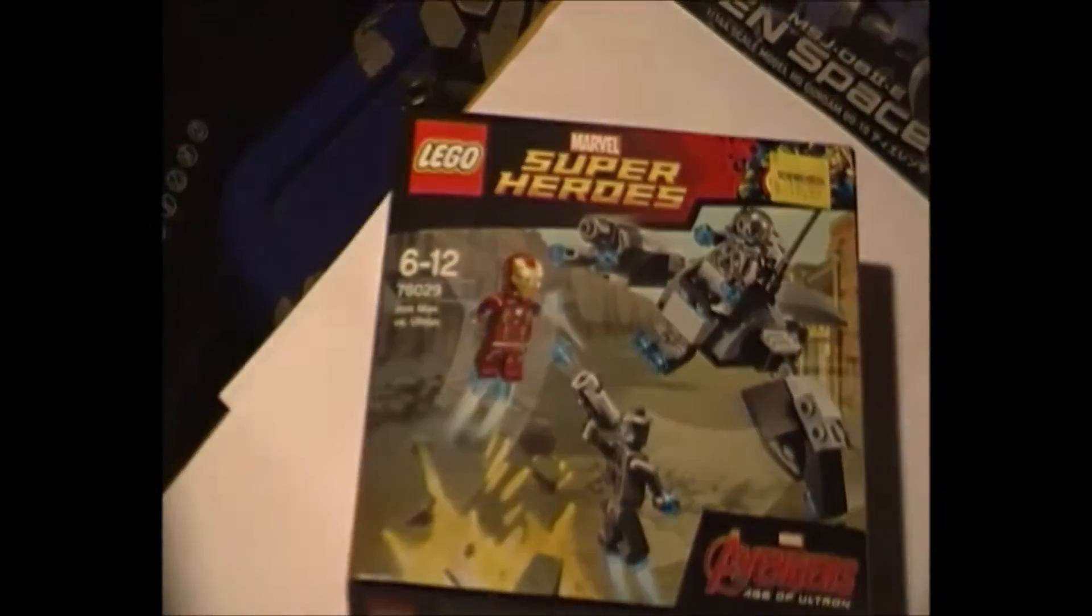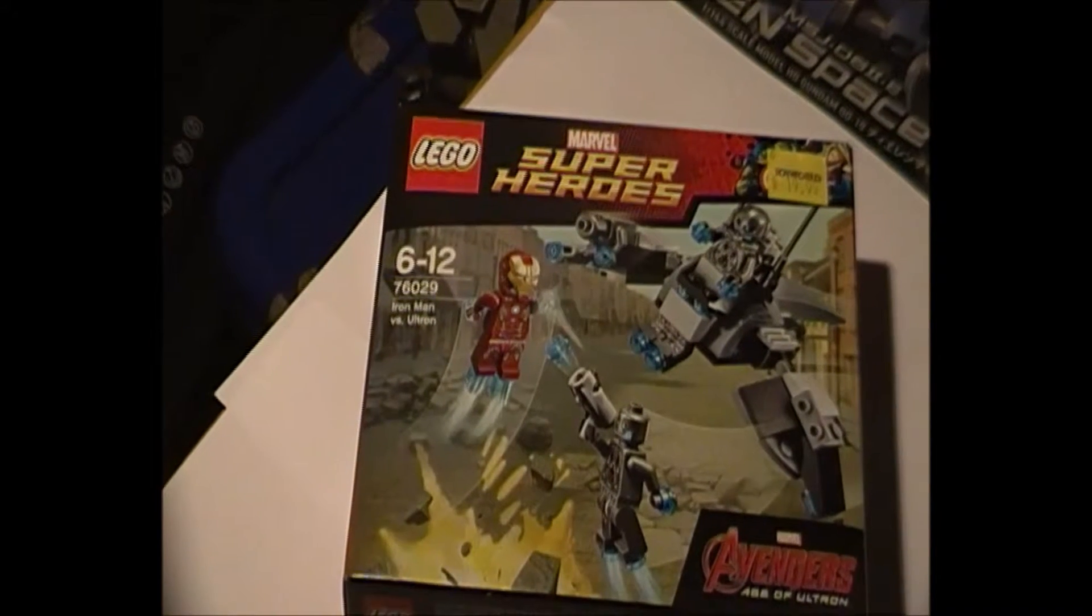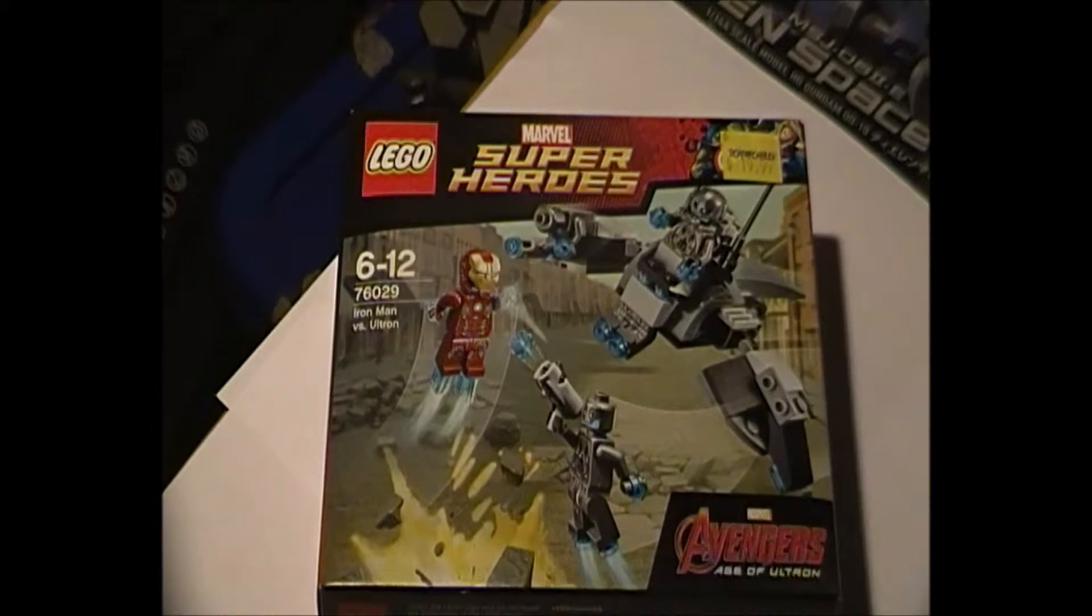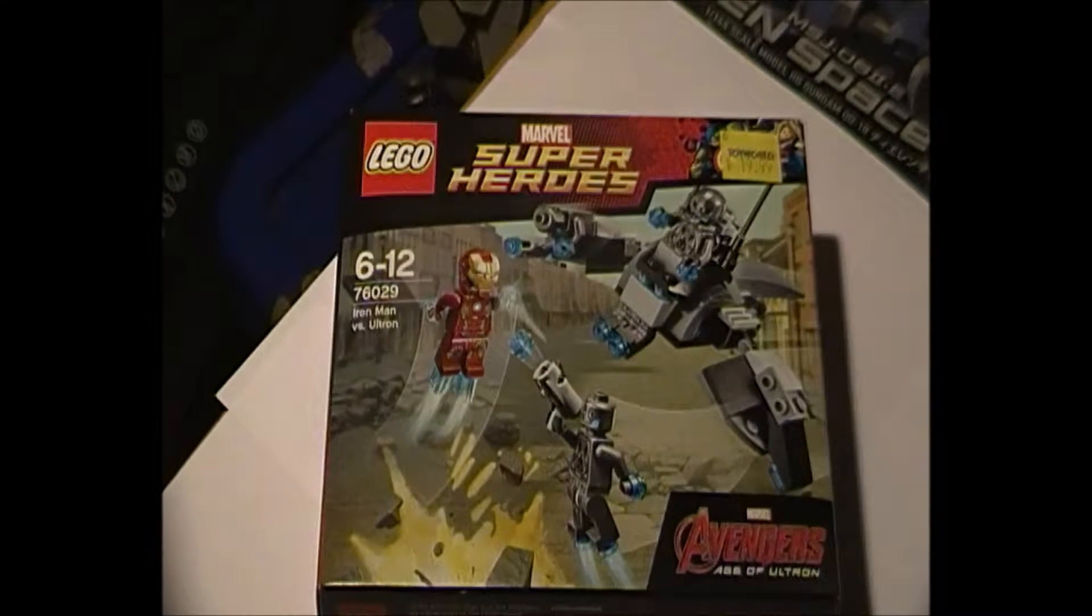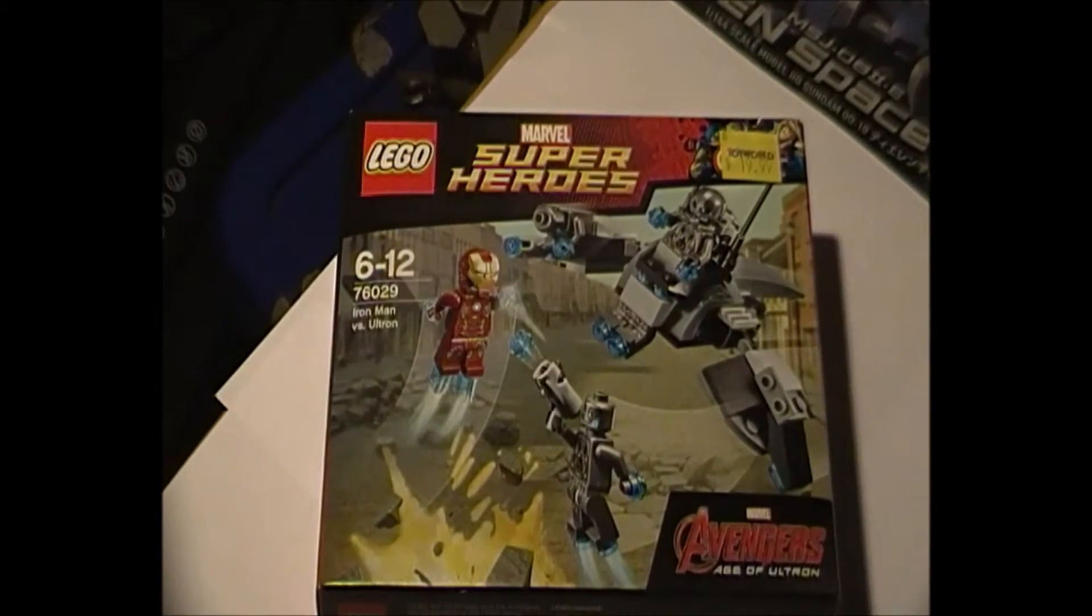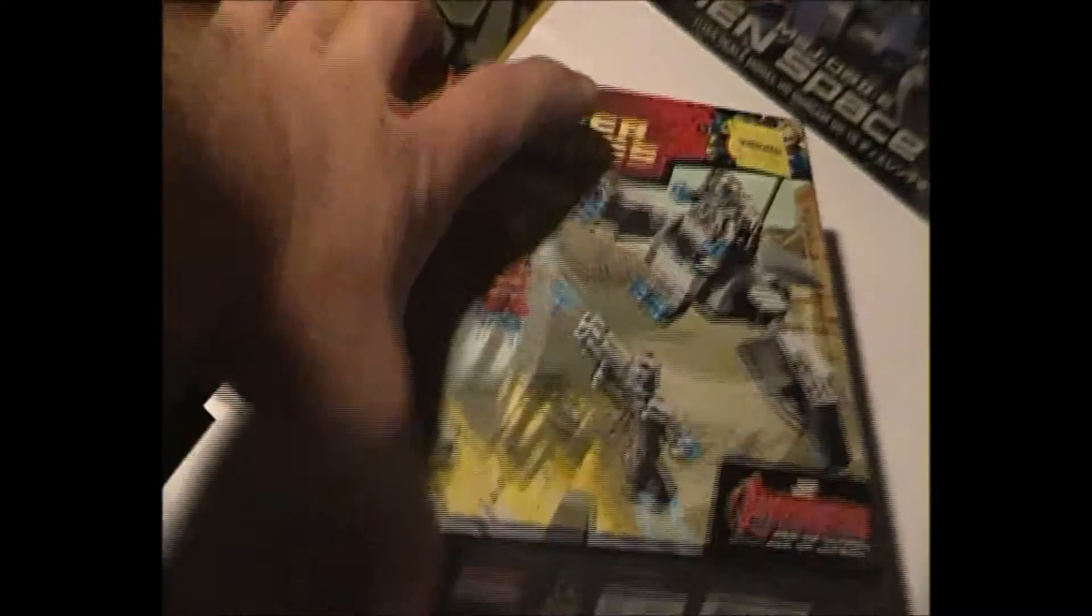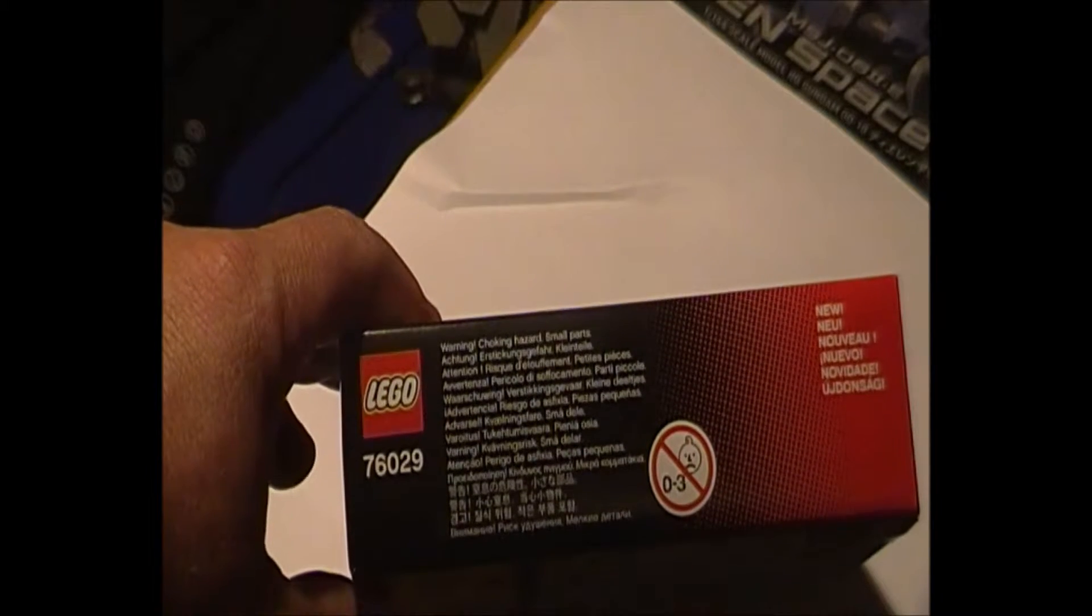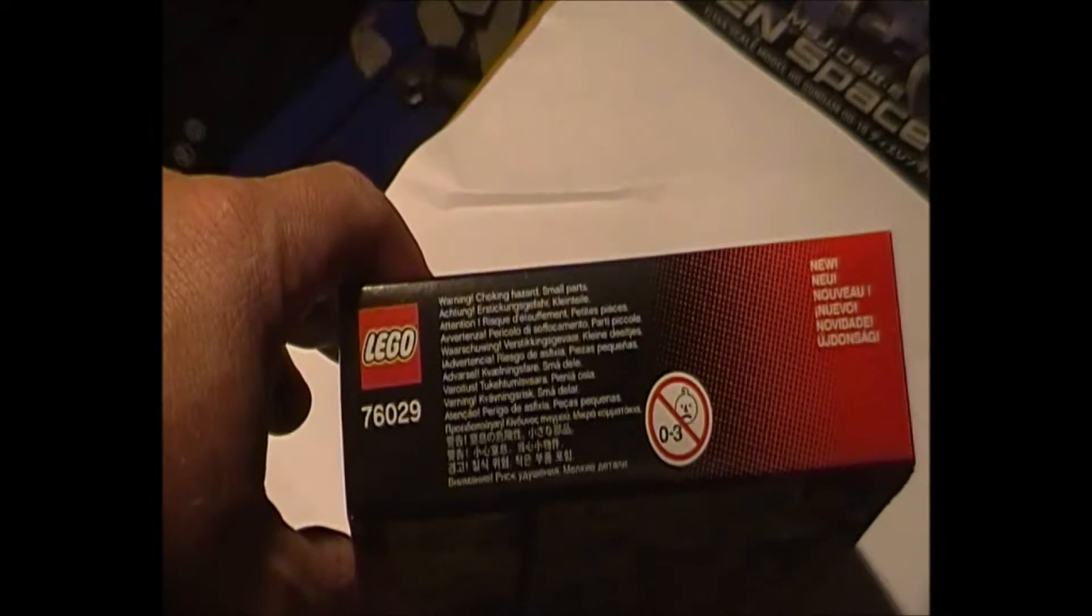Doing a quick run around the box, we can see on the front a static scenery image of what you could do with it. It has the Avengers Age of Ultron logo in the bottom right hand corner, standard LEGO logo in the top left. There is actually meant to be an Avengers motif there, but unfortunately the retailer has stuck a sticker over it. Coming around the side, there's your obligatory warnings: do not chew, do not eat, contains small parts, not recommended for kids between zero and three years old.